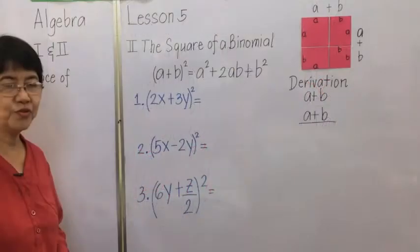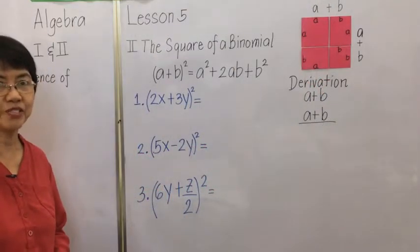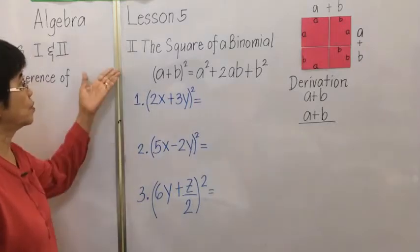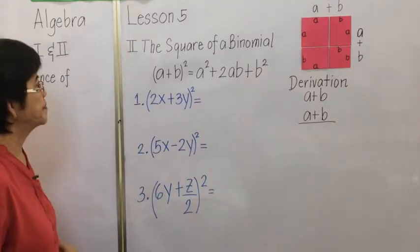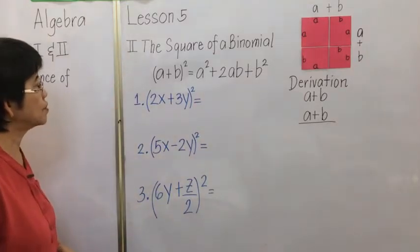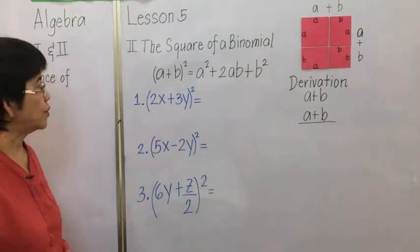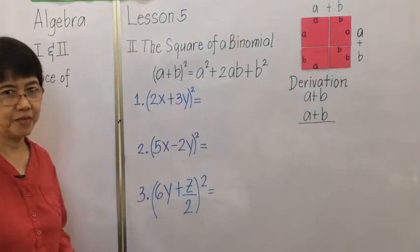Now let's move on to our second special product formula: the square of a binomial. The quantity a plus b squared is equal to a squared plus 2ab plus b squared.